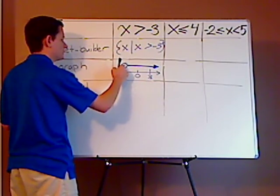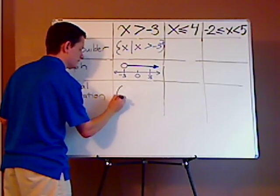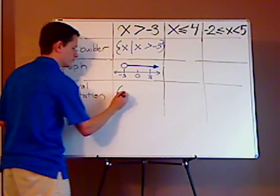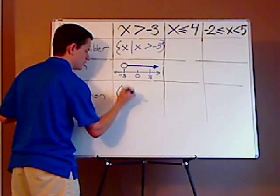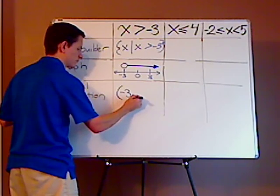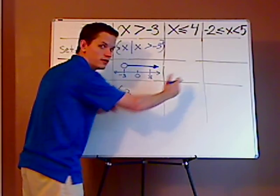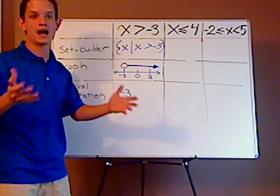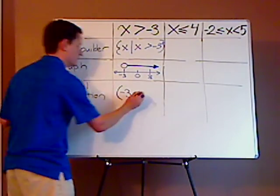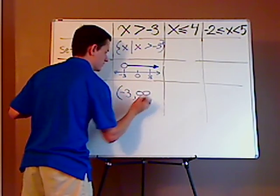So since it's not included, you're going to use parentheses. So parentheses, negative three, comma, and look, it's going on forever. It's getting very large and positively. So it's going to be a positive infinity.